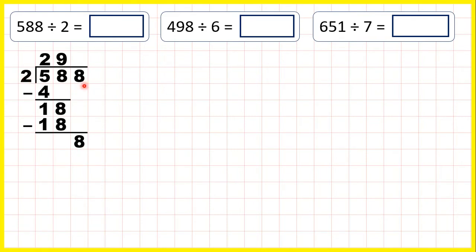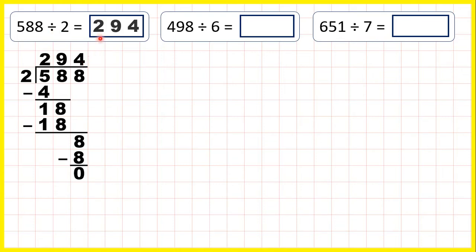Because it's our last digit, we can just write the answer. 8 divided by 2 is 4, because 4 times 2 is 8. But if we want to show that we don't have a remainder, we can subtract 8 and get 0. So 588 divided by 2 is 294.